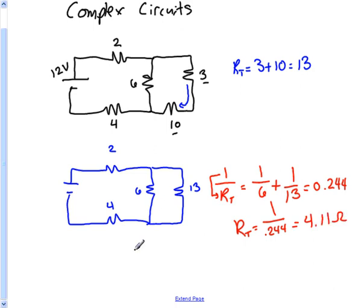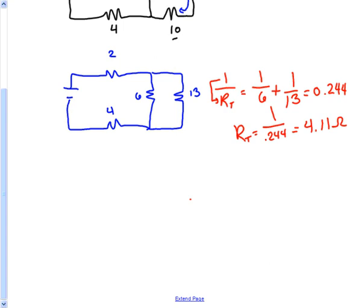So now if we redraw this, we have a circuit that now looks like this. And this is still 2Ω, this is still 4Ω, and now this has been replaced with 4.11 ohms.